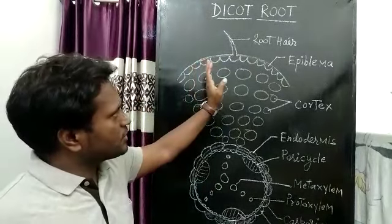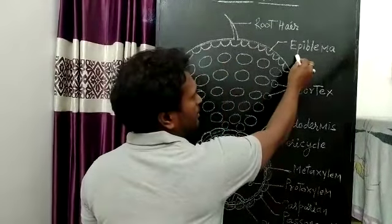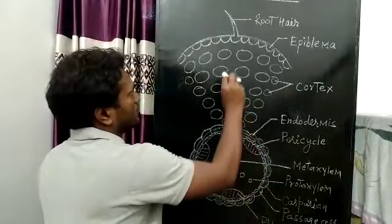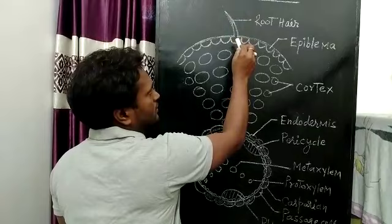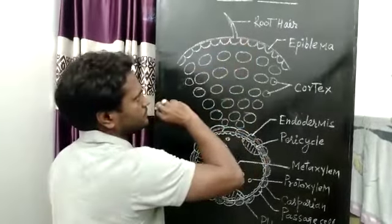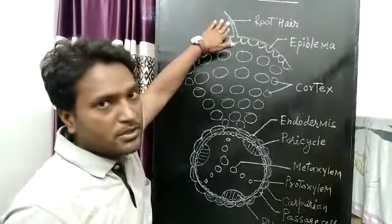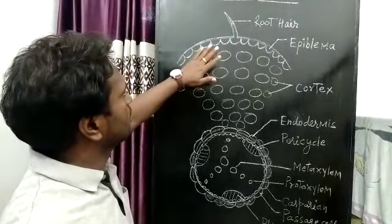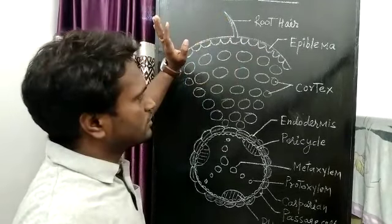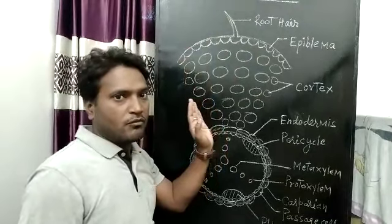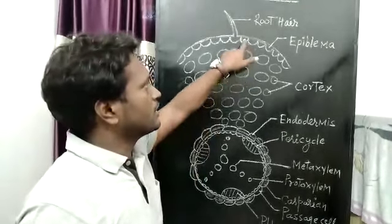When we see the internal structure of the root, we see the following structure. The outermost layer of the root is known as Epiblema or Epidermis. From the Epidermis, unicellular root hairs arise — these are elongations of epidermal cells in the zone of maturation region of the root. These root hairs help in absorption of water and minerals. Importantly, above the Epiblema there is no cuticle or wax layer, because the root has to absorb water, and cuticle and wax would check that absorption. That is why cuticle and wax are absent above the Epiblema.